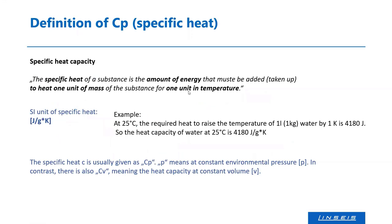The definition of specific heat is pretty easy. The specific heat of a substance is the amount of energy that must be added or taken up by the substance to heat one unit of mass for one unit in temperature. For instance, to heat one kilogram of water by one Kelvin, you need 4.18 kilojoules per gram per Kelvin. That is what specific heat means.